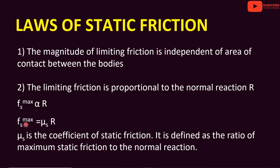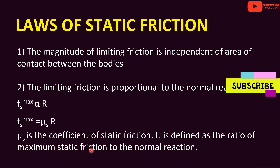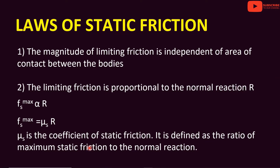Fs max, the limiting friction, is equal to mu_s times R, where mu_s is the coefficient of static friction. The coefficient of static friction mu_s is equal to the limiting friction divided by R — that is, the ratio of the maximum static friction to the normal reaction.